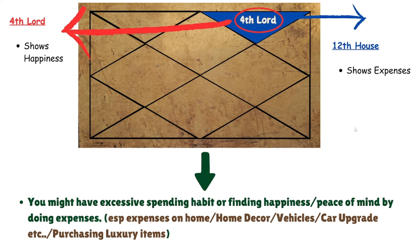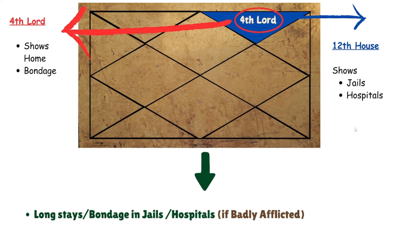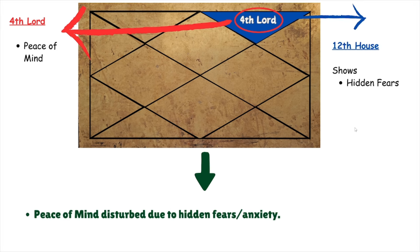The fourth lord shows home and bondage, and the twelfth house is the house of jails and hospitals. If very badly afflicted, this can also show living in jail for a long time or long hospital stays. The fourth lord is the lord of peace of mind, and the twelfth house shows hidden fears, so peace of mind may be disturbed due to hidden fears and anxiety. The remedy is to do yoga, meditation, or spiritual practices, as the twelfth house signifies all of that.